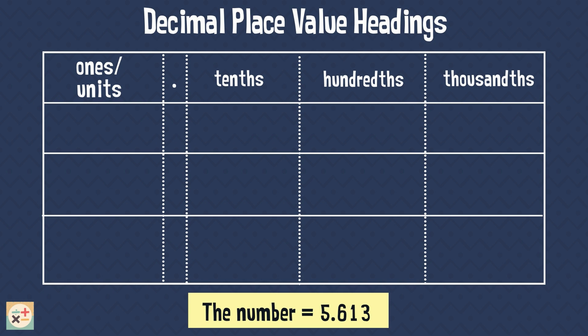Here we can see the number 5.613 can be split into ones, tenths, hundredths, and thousandths. So we in fact have 5 plus 0.6 plus 0.01 plus 0.003.